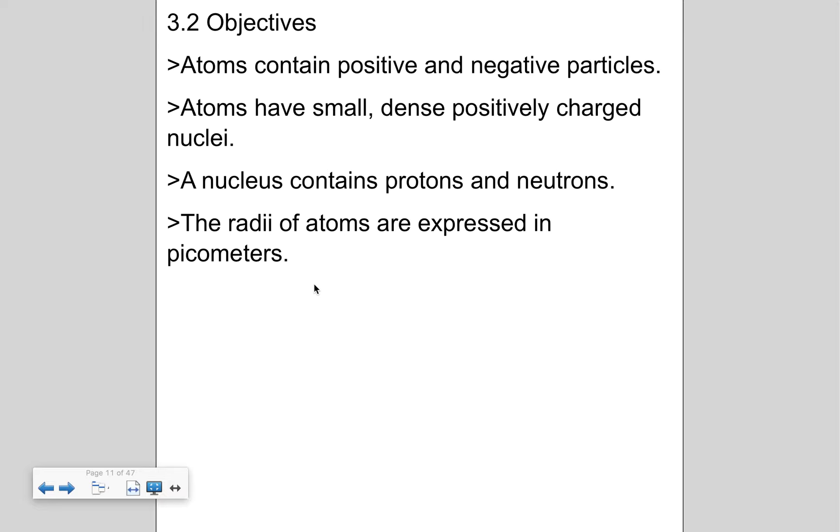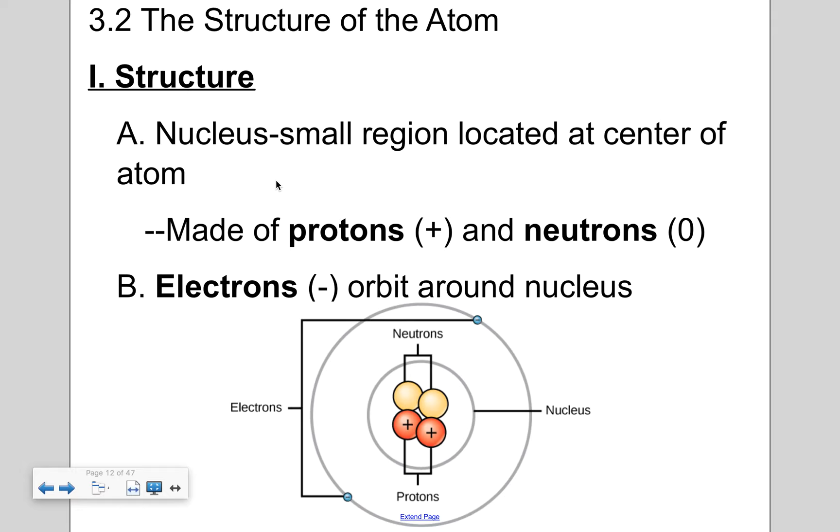So 3.2 is titled the structure of the atom. Some of the main ideas we're going to go over: atoms contain positive as well as negative particles, atoms are small, they're dense, they have a positively charged nuclei, nucleus contains protons and neutrons, and then what is a radii and the unit that they use to describe the radii.